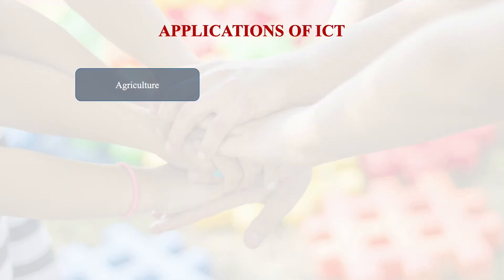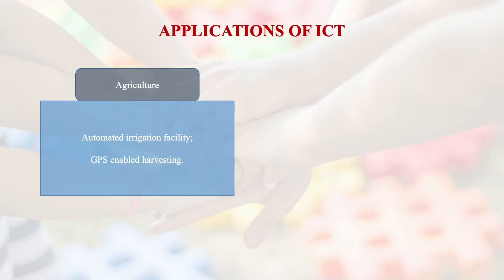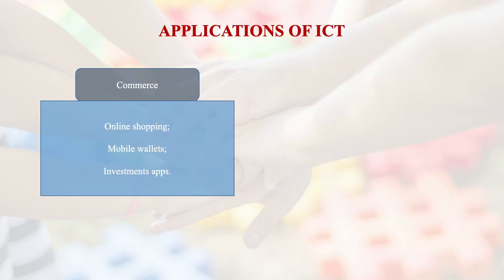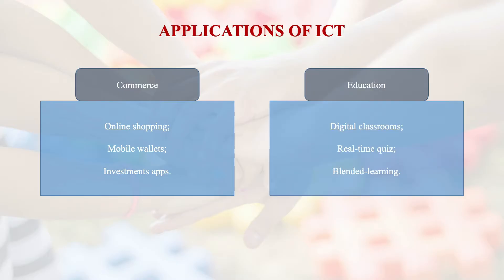There is also the concept of artificial intelligence, which we are using in present-day experiences — that is also very important for NGOs. ICT can be used in agriculture, like automated irrigation facilities and GPS-enabled harvesting. For tourism, it is being used like GPS-enabled cabs, online ticket booking, and real-time hotel check-in. For commerce, it's like online shopping, mobile wallets, and investment apps. For education, digital classrooms, real-time quiz, and blended learning. These are all the applications and uses of ICT.